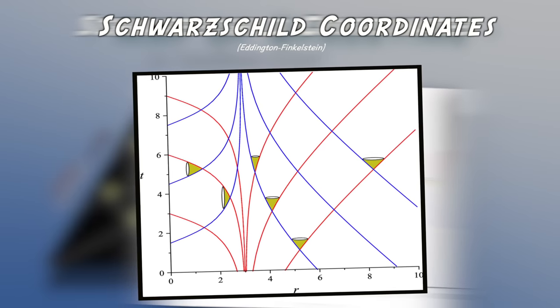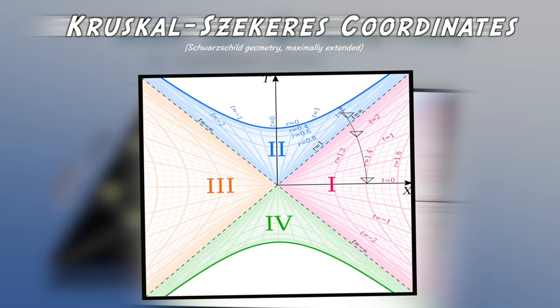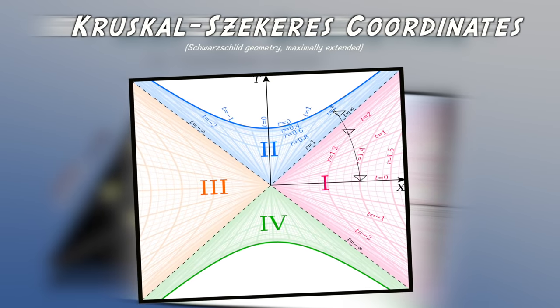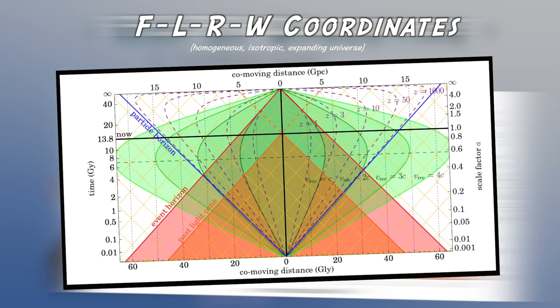We have Schwarzschild coordinates, Kruskal-Szekeres coordinates, FLRW coordinates, etc.